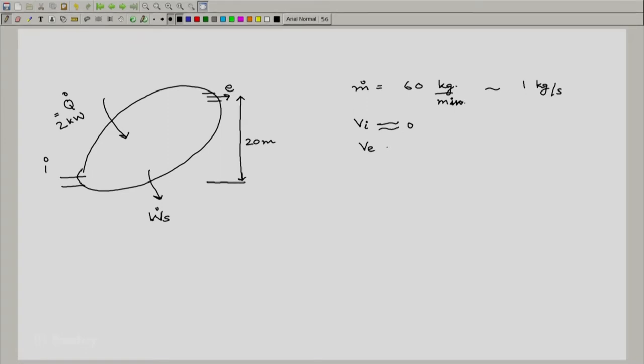Again, this is non-standard. Let me convert it into standard units and this is what is expected. You just have to divide it by 60 and you will get meters per second. So if we look at V e squared by 2 minus V i squared by 2 that would just be equal to V e squared by 2 because V i is negligible.